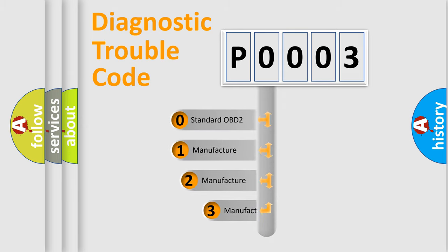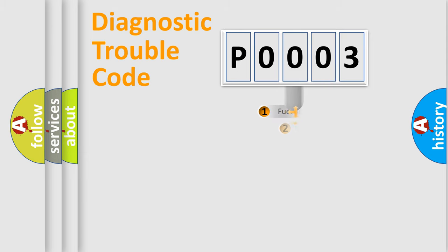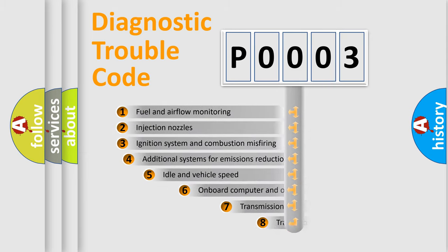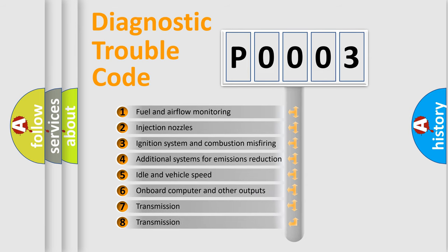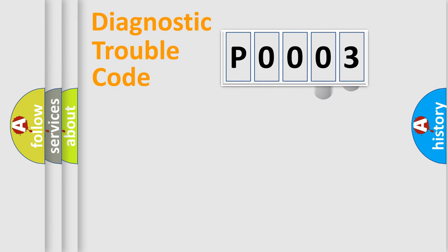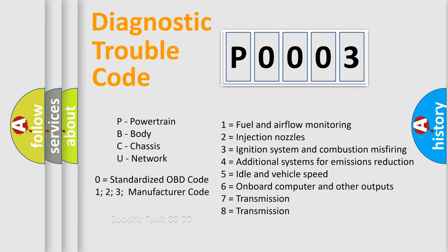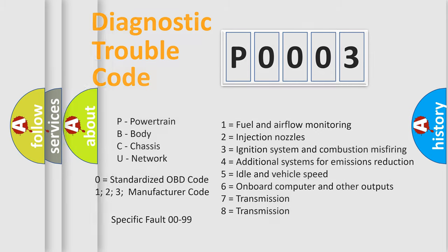If the second character is expressed as zero, it is a standardized error. In the case of numbers 1, 2, or 3, it is a more specific expression of a car-specific error. The third character specifies a subset of errors. This distribution is valid only for the standardized DTC code. Only the last two characters define the specific fault of the group, and this division is valid only if the second character code is expressed by the number zero.